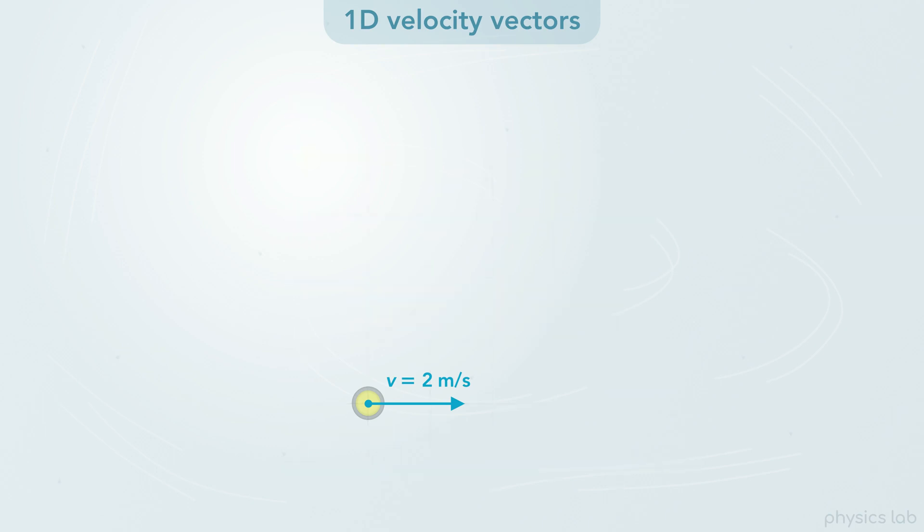So the magnitude of the velocity is 2 meters per second, but we can draw the vector any length that we want. Having said that, the length does matter if we're comparing multiple vectors.